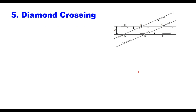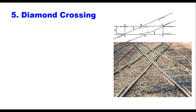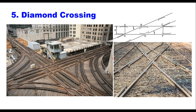The next type is a diamond crossing. When two tracks cross each other, it is called a diamond crossing. It does not contain any points — it only has four crossings: two acute angle crossings and two obtuse angle crossings. The two tracks can be of the same gauge or of different gauges, such as metre gauge and broad gauge lines crossing each other. When two tracks cross each other at 90 degrees, it makes a square crossing.